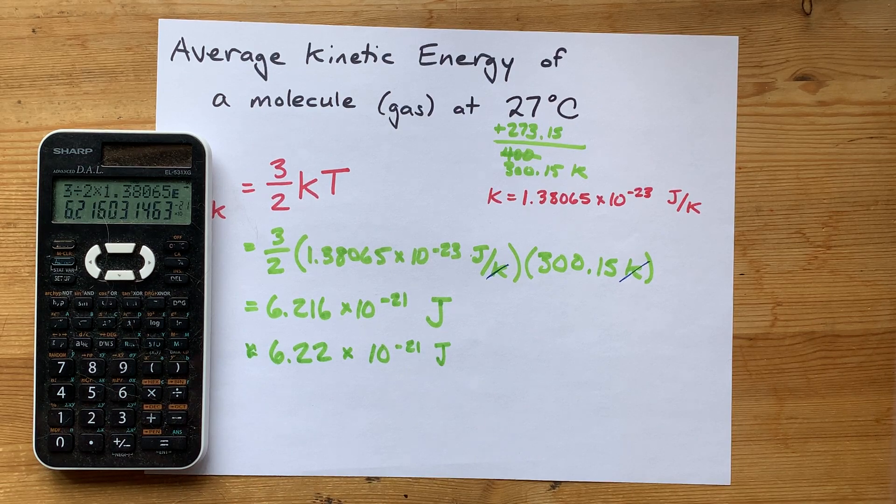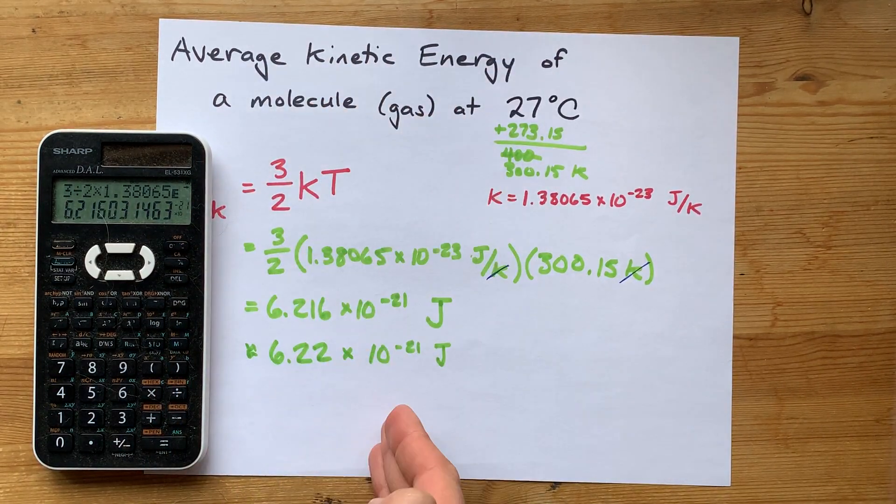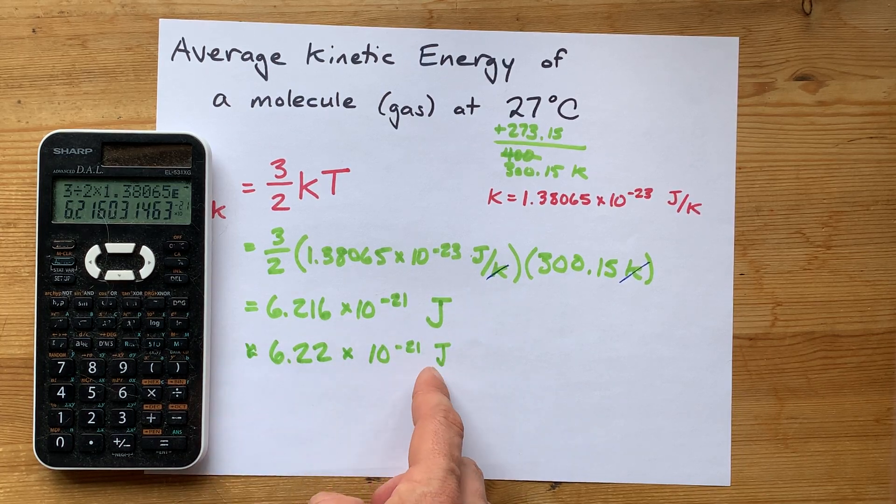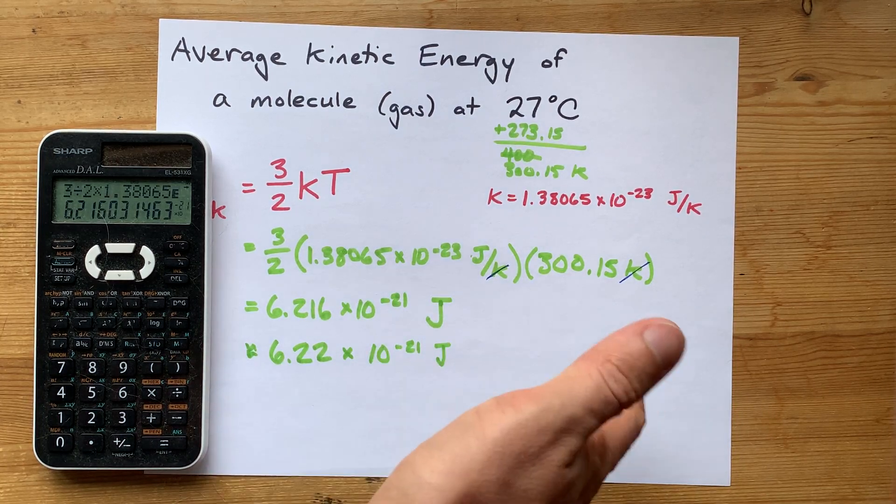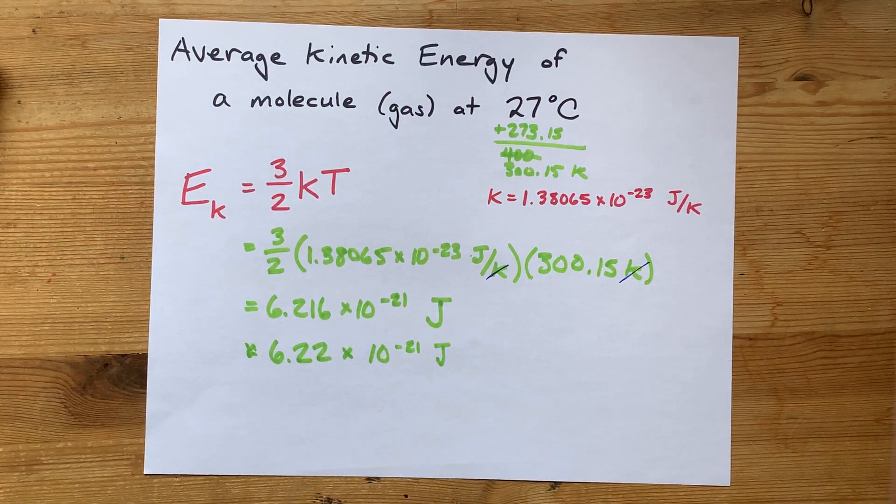There you go. Now, if you happen to have been asked for the total kinetic energy of a mole of molecules, you can just multiply that by Avogadro's number, but that's not what this question asked for. So why would I? Thanks for being with me, and best of luck.